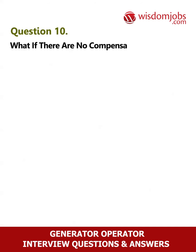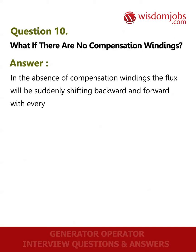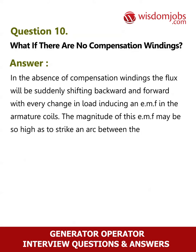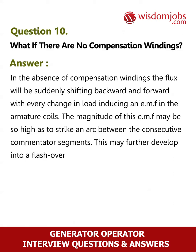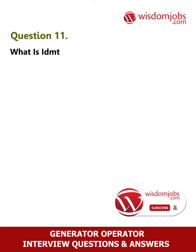Question 10: What happens if there are no compensation windings? Answer: In the absence of compensation windings, the flux will be suddenly shifting backward and forward with every change in load, inducing an EMF in the armature coils. The magnitude of this EMF may be so high as to strike an arc between the consecutive commutator segments, which may further develop into a flashover around the whole commutator, thereby short-circuiting the whole armature.